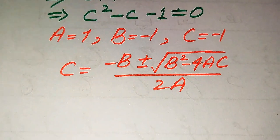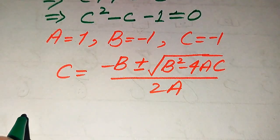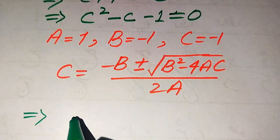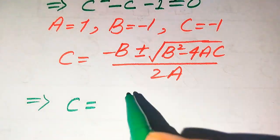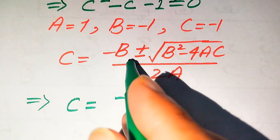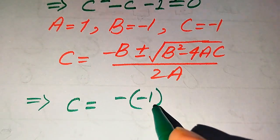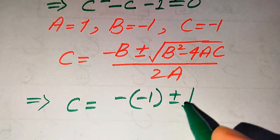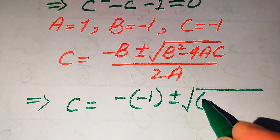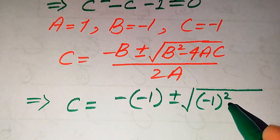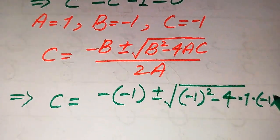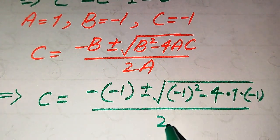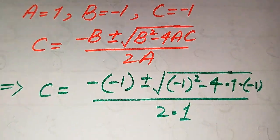Now we substitute the values of a, b, and c into this formula. After substituting, we have: b is minus 1, so we get minus of minus 1, plus or minus square root of minus 1 squared, minus 4 times a which is 1, times c which is minus 1, all divided by 2 times a which is 1.